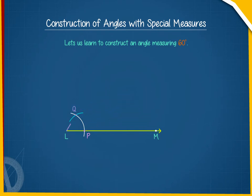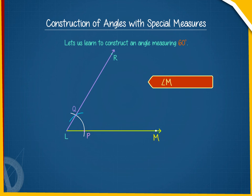Join LQ and produce it to get a ray LR. Hence, angle MLR is equal to 60 degrees.